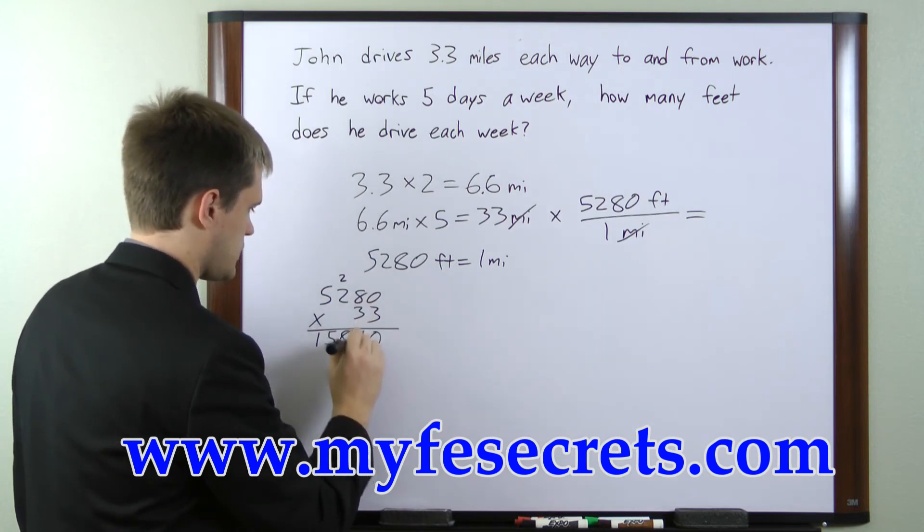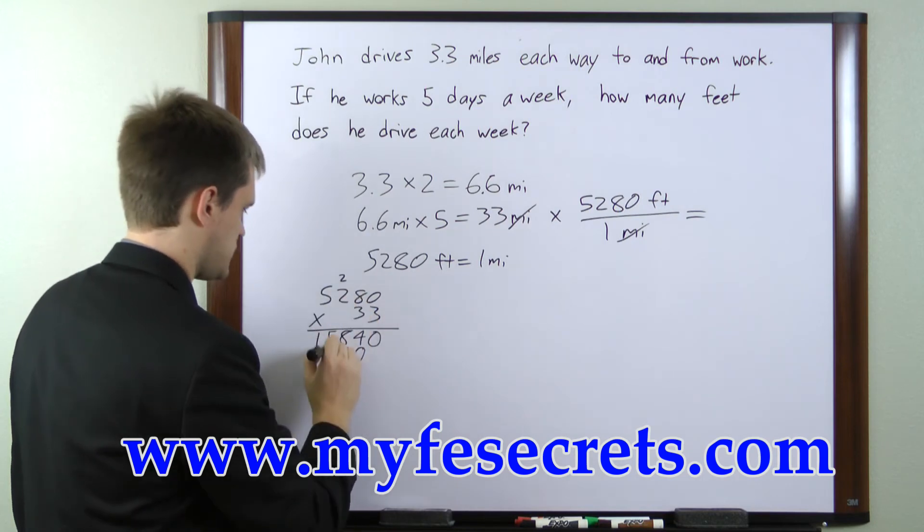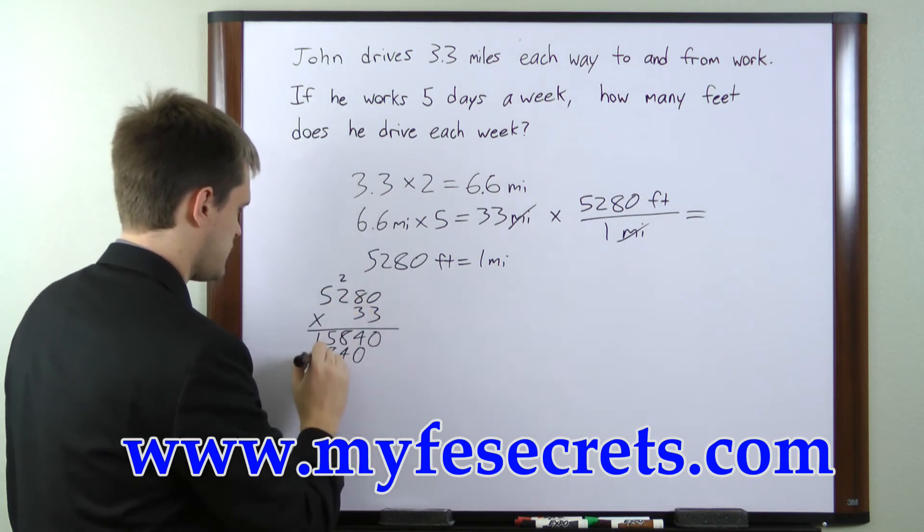3 times 0 is 0. 3 times 8 is 24. 3 times 2 is 6 plus 2 is 8. 3 times 5 is 15.